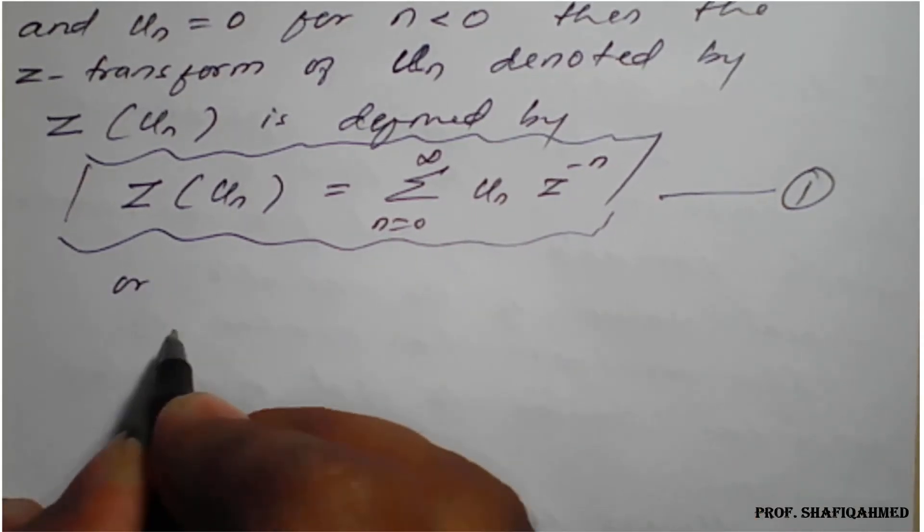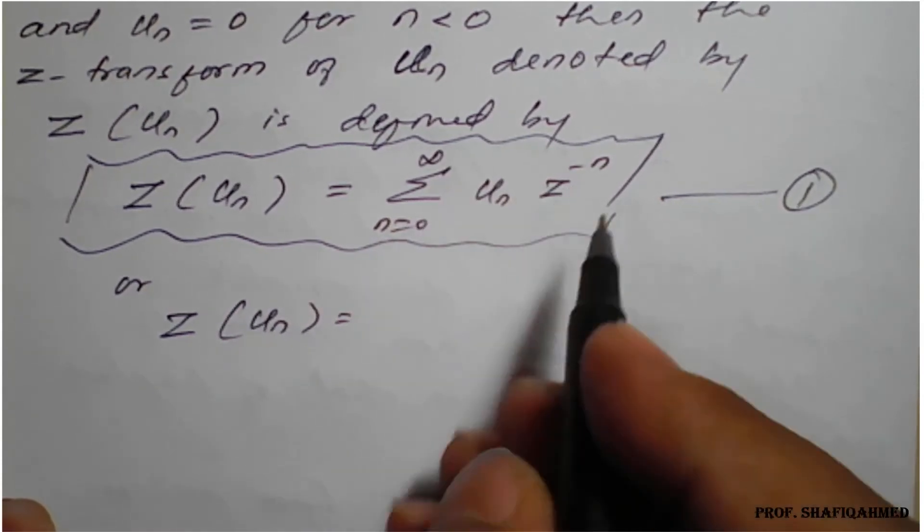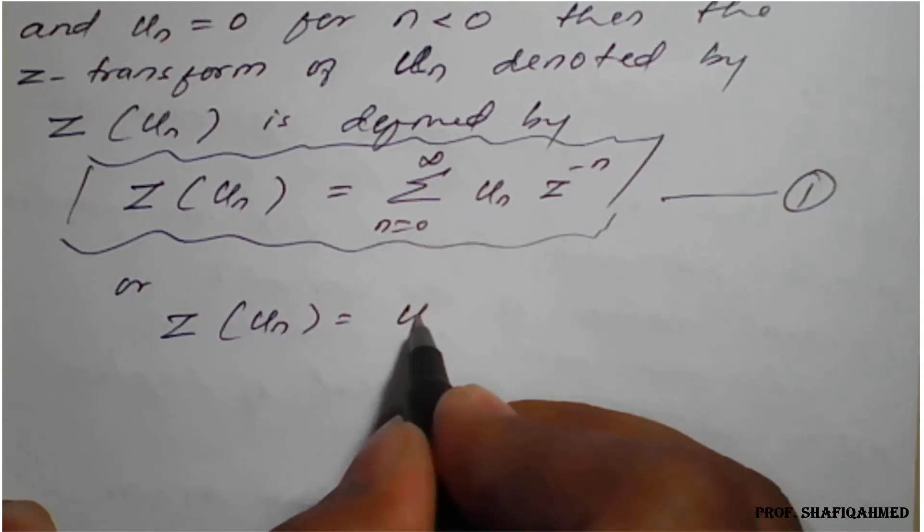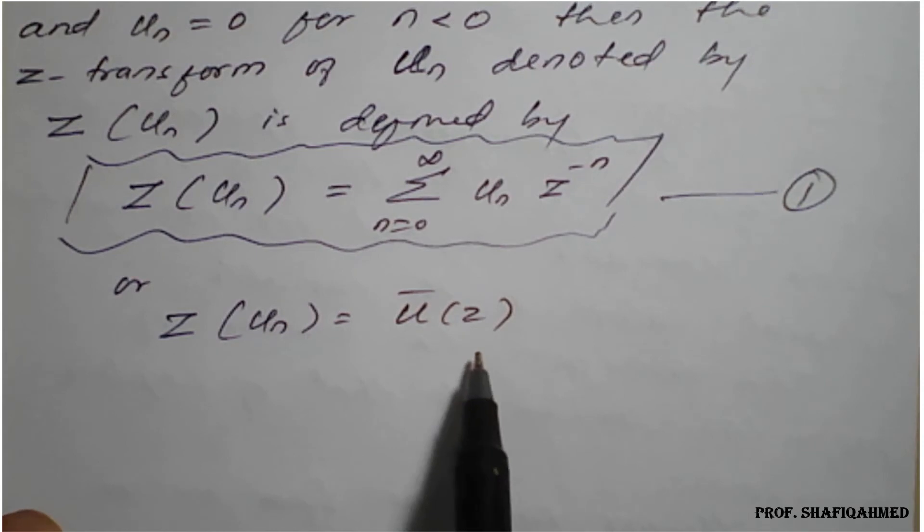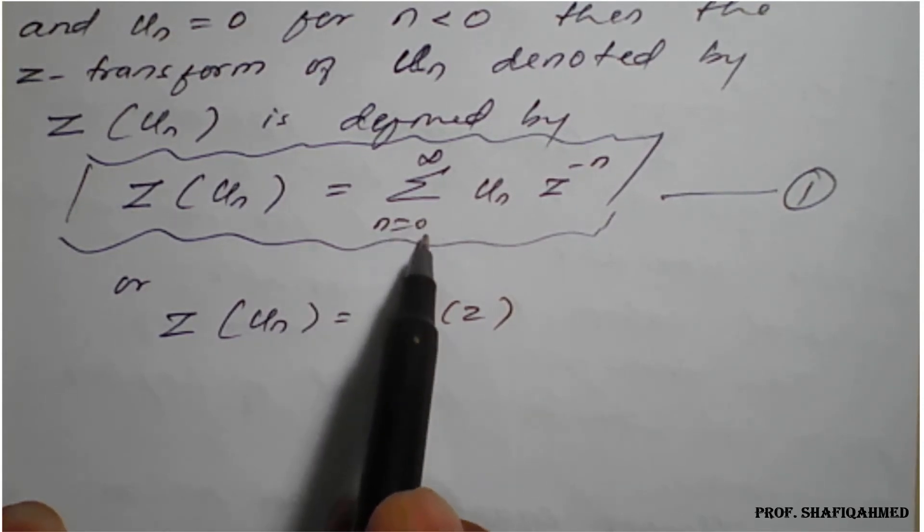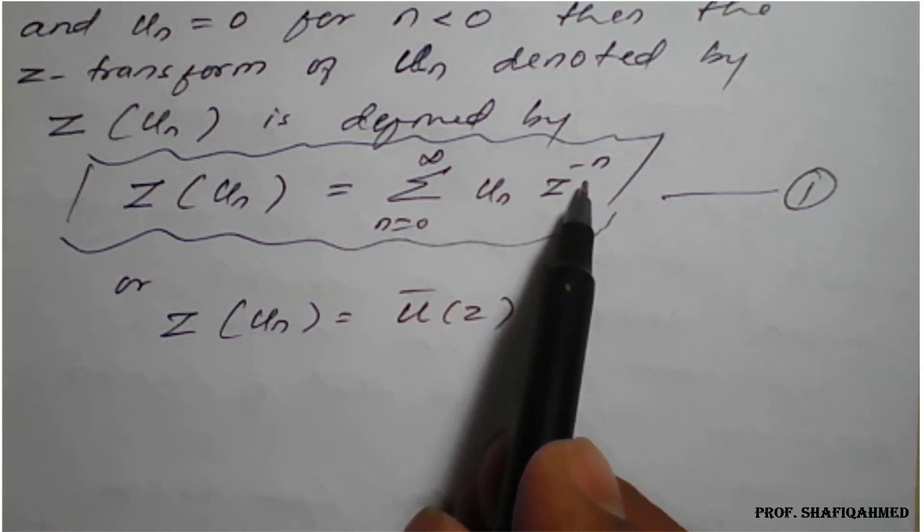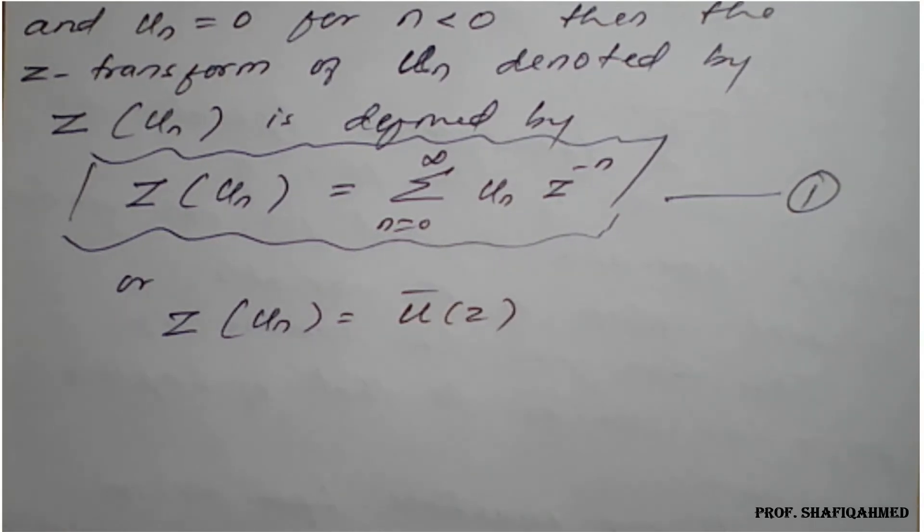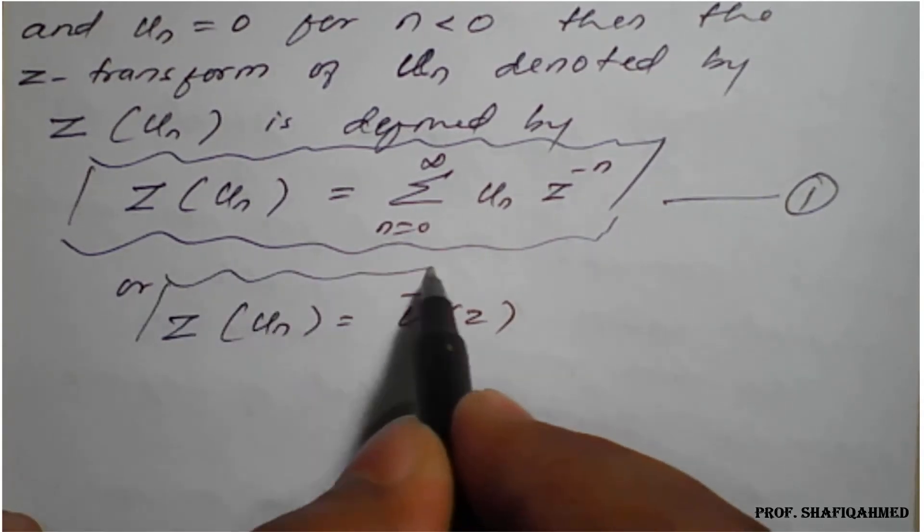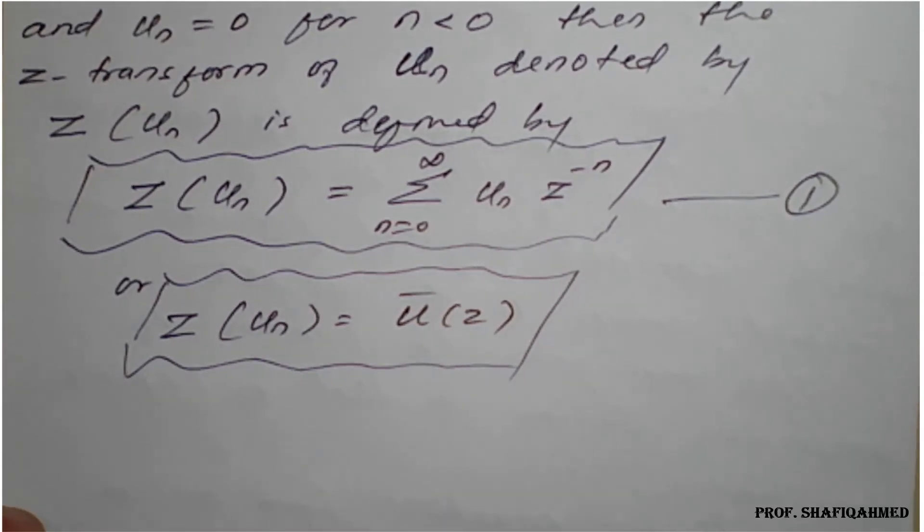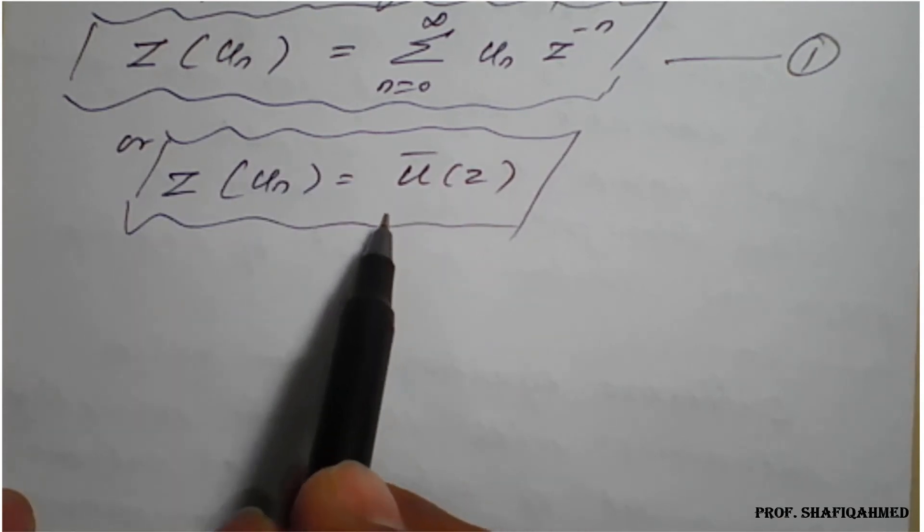Hence if u'(z) comes, you can consider it as summation n from 0 to infinity of u_n z raised to minus n. So this is the definition of Z-transform. Reverse part is also possible, so reverse part of this situation is going to be called as inverse Z-transform. So I will give you this as equation number two.